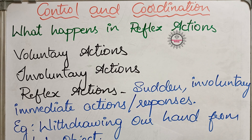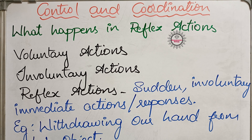The second type are involuntary actions. Involuntary means the actions which are not voluntary in nature. These actions take place without our control, without our knowledge, without our consciousness. Examples are like heartbeat — at present our heart is beating, but we don't want to do it and we are not controlling that.